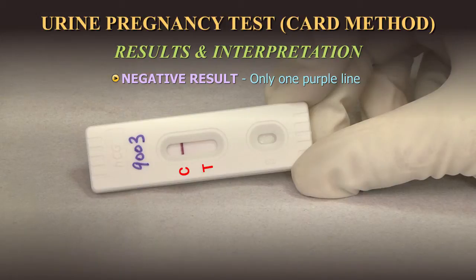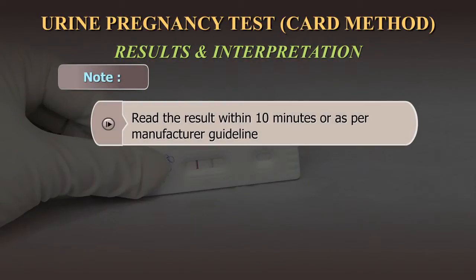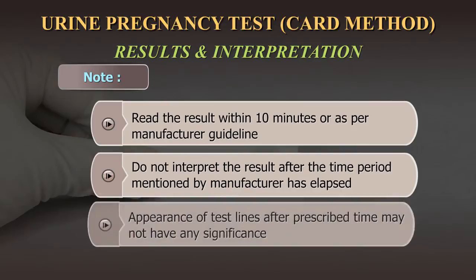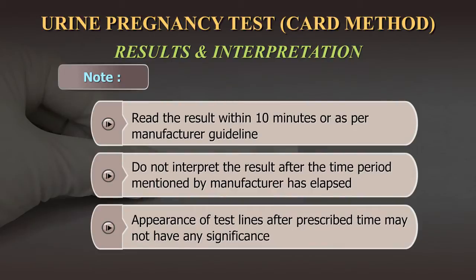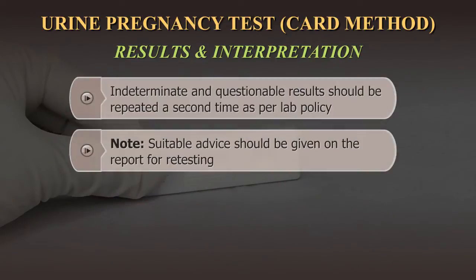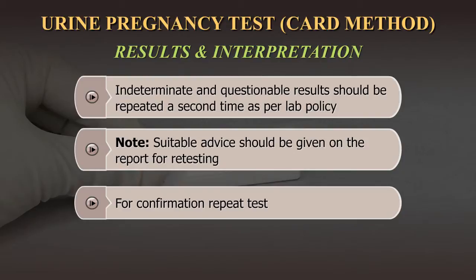A negative result is indicated if only one purple line appears in the result window at C. If no lines appear in the result window with distinct colour, it is an invalid result and it is recommended to repeat the test. Read the result within 10 minutes or as indicated by the manufacturer. Do not interpret the result after the time indicated, as appearance of test results after this time may not have any significance. Results are reported as either positive or negative. Questionable results should be repeated; discard the used test device and repeat with a fresh device and fresh sample.